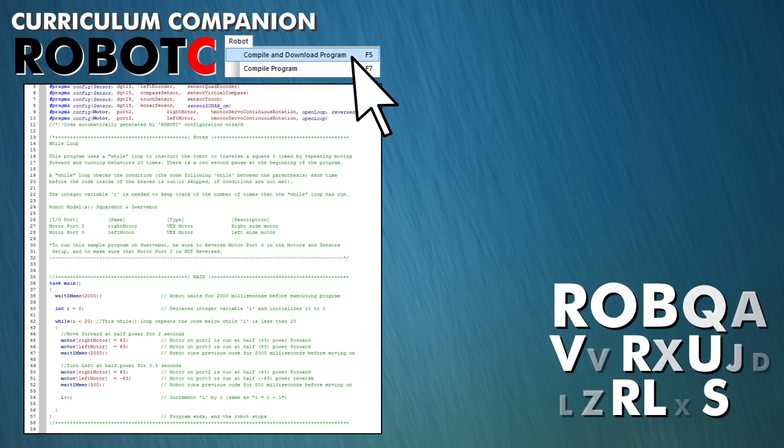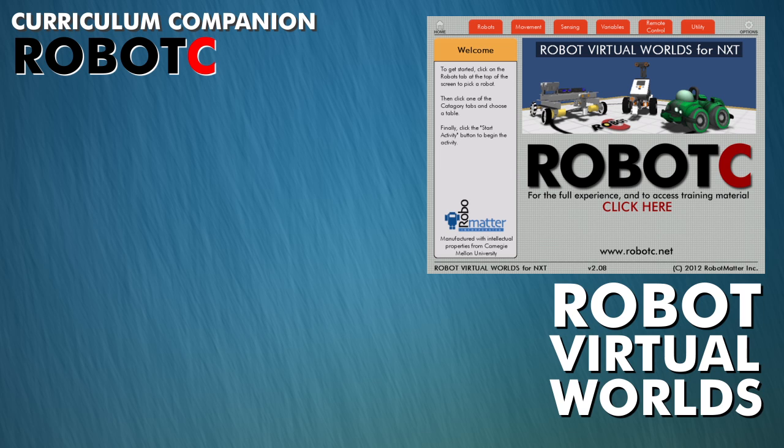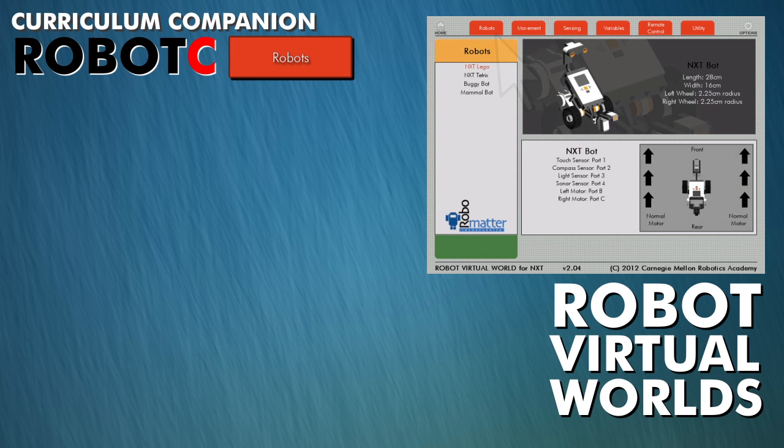Once the code is downloaded, the Virtual Worlds window appears. From here, students will start by selecting a robot.